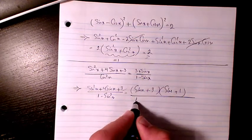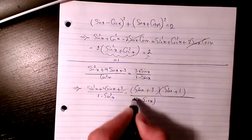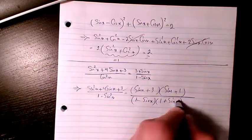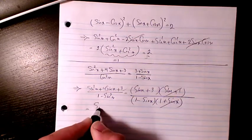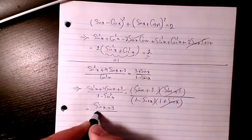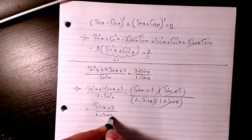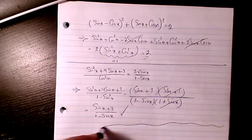In here I have 1 minus sine x times 1 plus sine x. These two cancel out and the answer will be sine x plus 3 divided by 1 minus sine x. As you see here, that's proven.